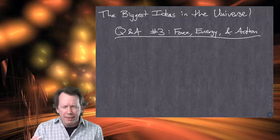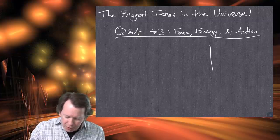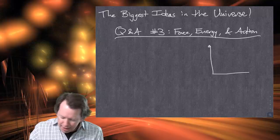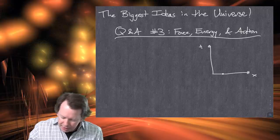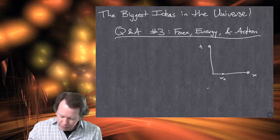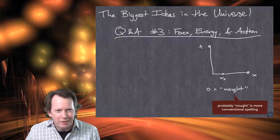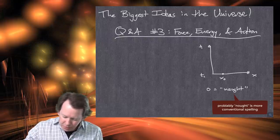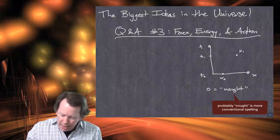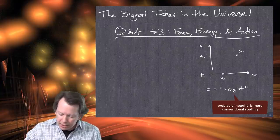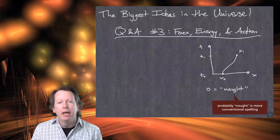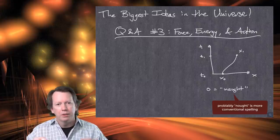So, what are the things I didn't talk about in the actual video that I want to talk about? Remember we were talking about the Newtonian versus Lagrangian paradigms. So here is a particle at some point X — this is X naught. 'Naught' is just a way of saying zero. And then at some other time T1, the particle is located at X1.